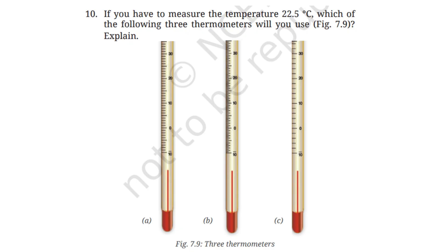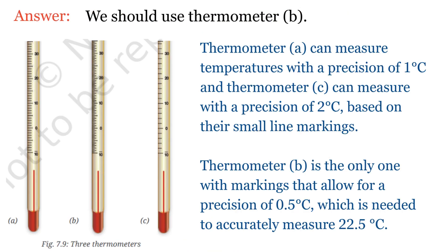Question 10: If you have to measure the temperature 22.5°C, which of the following three thermometers will you use? Explain. We should use thermometer B because thermometer A can measure with a precision of 1°C and thermometer C with a precision of 2°C based on their small line markings. Thermometer B is the only one with markings allowing a precision of 0.5°C, which is needed to accurately measure 22.5°C.